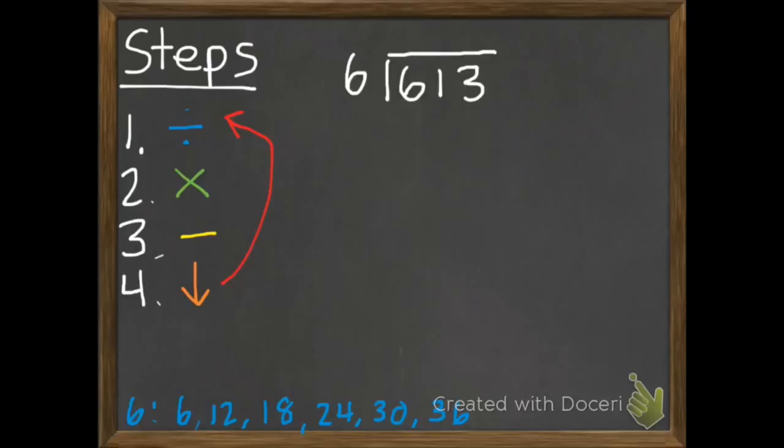The first one is how many 6's are in 6. So that's just 1. The second step, multiply. 1 times 6 is 6. Third step, subtract. 6 subtract 6 is 0. And we bring down.